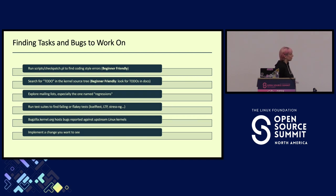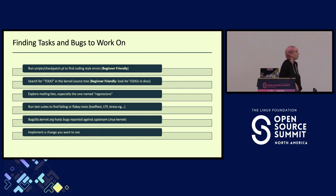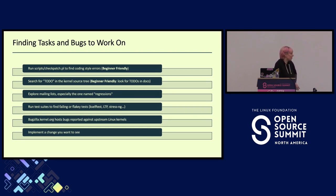Explore mailing lists — especially the regressions mailing list where you can find reports and maybe help someone who ran out of time to continue working on something. Run test suites to find failing or flaky tests that sometimes pass, sometimes fail. Bugzilla hosts a lot of bugs reported upstream. And of course, implement any changes you want to see — maybe a new driver you want supported or different kernel behavior. These are several ways to get involved directly in the kernel.